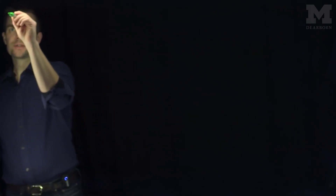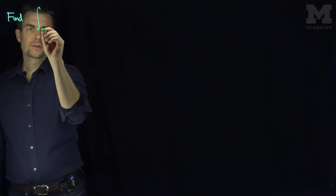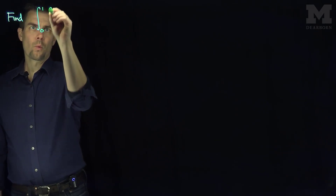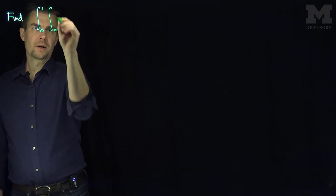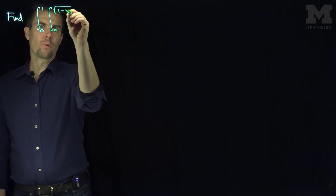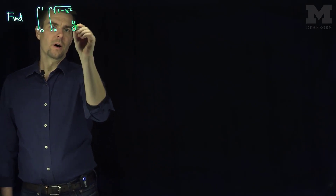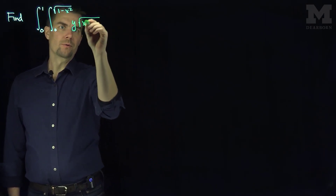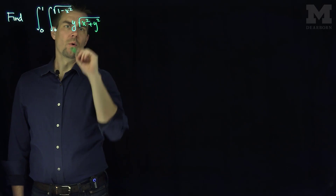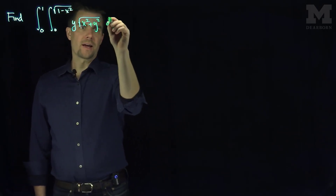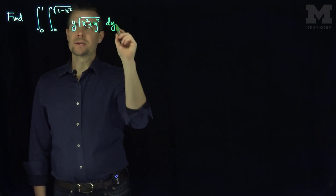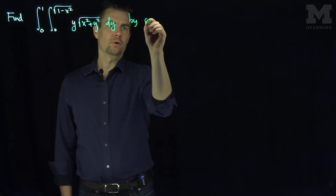Hello students. In this video we'll see an example of converting a double integral into polar coordinates. In this example we're going to find the integral where x goes from 0 to 1, y goes from 0 to the square root of 1 minus x squared, of y times the square root of x squared plus y squared, dy dx, by converting to polar coordinates.